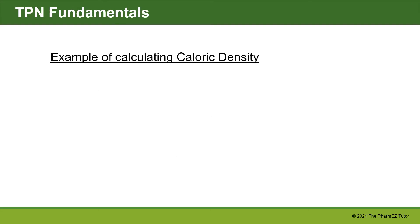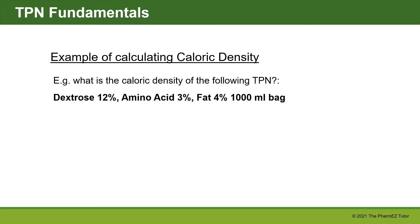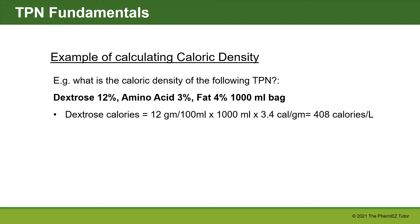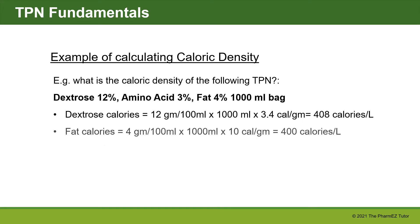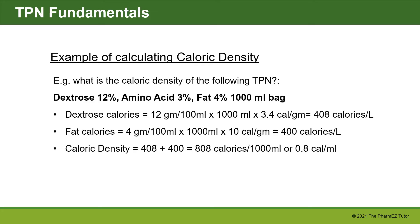Here's an example of calculating caloric density. What is the caloric density of a TPN with dextrose 12%, amino acid 3%, fat 4% in a 1,000 mL bag? First, dextrose calories: 12 grams per 100 mL × 1,000 mL × 3.4 cal/g = 408 calories per liter. For fat: 4 grams per 100 mL × 1,000 mL × 10 cal/g = 400 calories per liter. Total: 408 + 400 = 808 calories in the 1,000 mL bag, or a caloric density of 0.8 calories per mL.